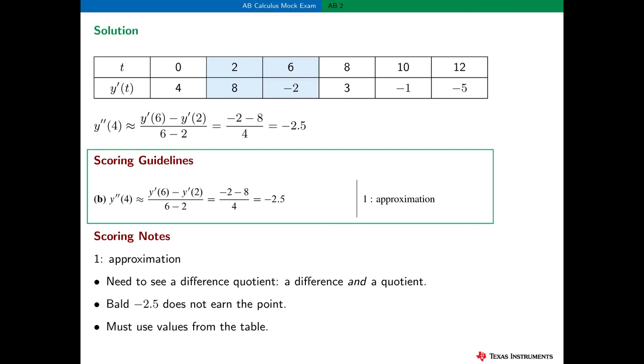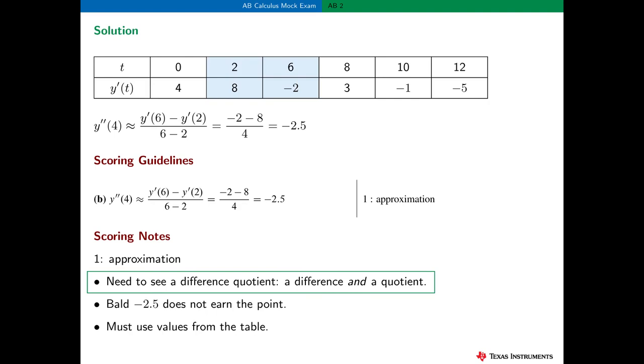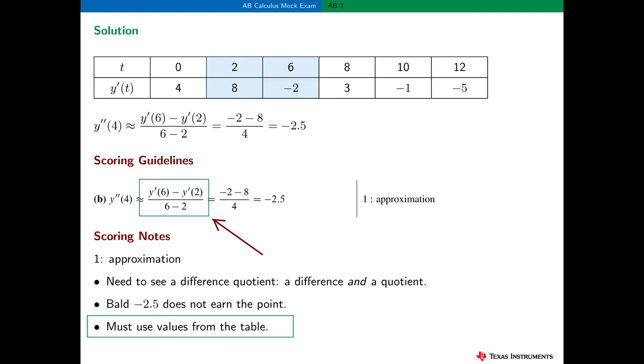The scoring guidelines are pretty simple here. One point for the correct approximation. And here are a few interpretations of these scoring guidelines. We need to see a difference quotient here for the student to earn the point. And that means we need to see both a difference and a quotient. So the fraction, for example, -10 divided by 4, does not earn this point. And a bald -2.5 does not earn the point. The student must also use the values from the table in order to earn the point. In other words, they cannot leave their answer like this. They must read and use the values of y' from the table.